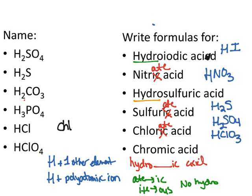Now, let's say this was chlorous acid. What would be the formula? Again, no hydro in front. Chlorous. Ous turns into ite. Chlorite is ClO2 with a 1 minus charge, so I need one H in front.